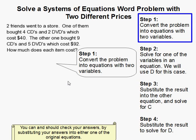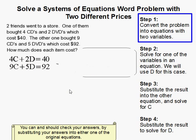The first step is to convert the problem into two equations with two variables. So, I did 4C for four CDs plus 2D for two DVDs equals $40. My second equation, I got 9C for nine CDs plus 5D for five DVDs equals $92.